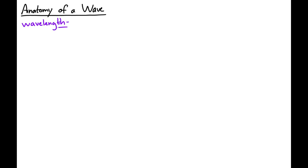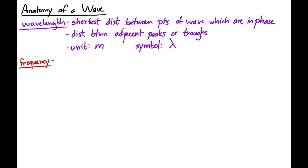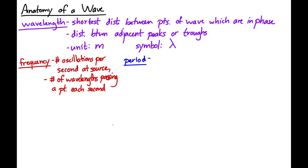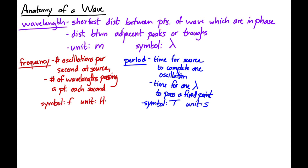We need to think about the anatomy of a wave — the ways we describe waves. The wavelength is defined as the shortest distance between points in the wave which are in phase; another way to think about it is the distance between adjacent peaks or troughs. The unit of wavelength is the meter, and the symbol is the Greek letter lambda (λ). Frequency is the number of oscillations per second at the source, also defined as the number of wavelengths passing a point per second. The period is the time for the source to complete one oscillation, or the time for one wavelength to pass a fixed point. Amplitude is the maximum displacement of the medium from equilibrium.